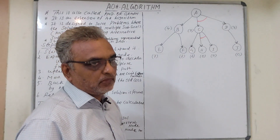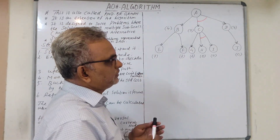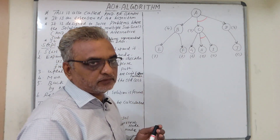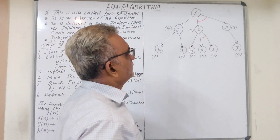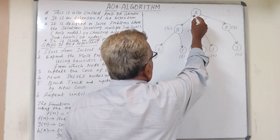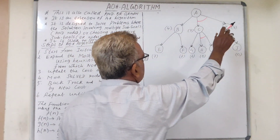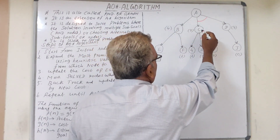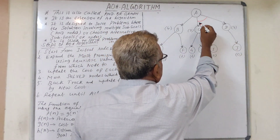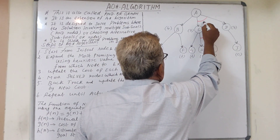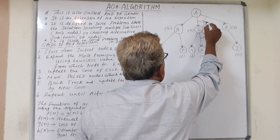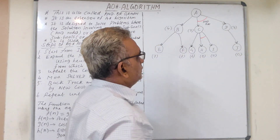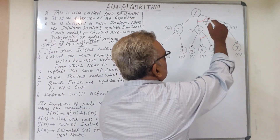This is the given problem and we have to find out the path which leads to the goal state. This is the initial node A, and from this initial node we have two possible ways: one is reaching B, and another one is C and D together, because here we have an AND arc. So we have to consider both these two paths from A.